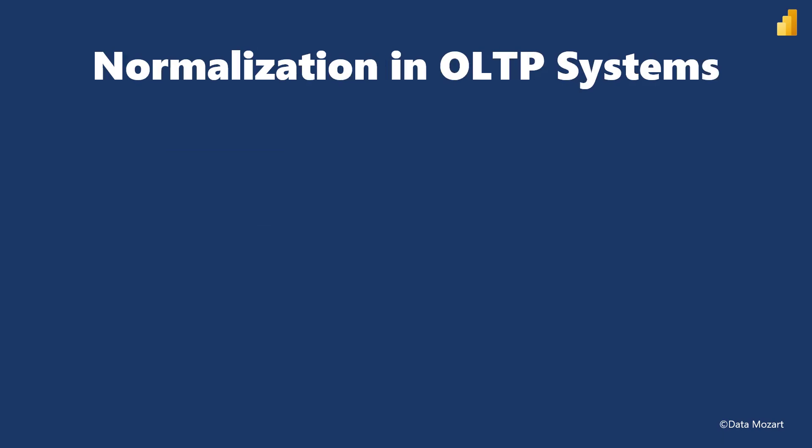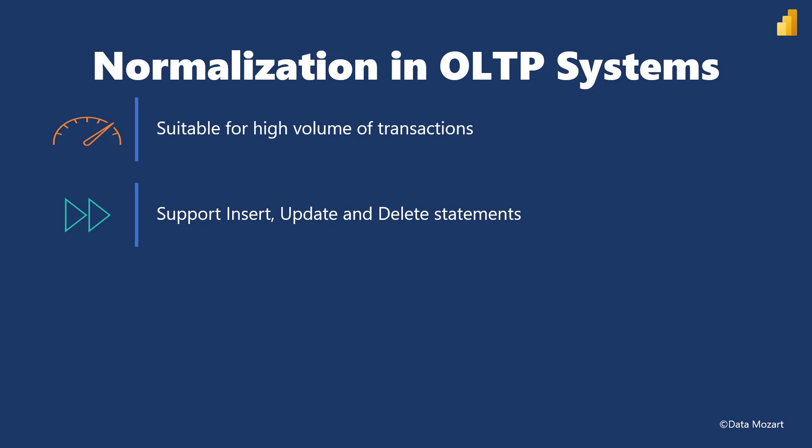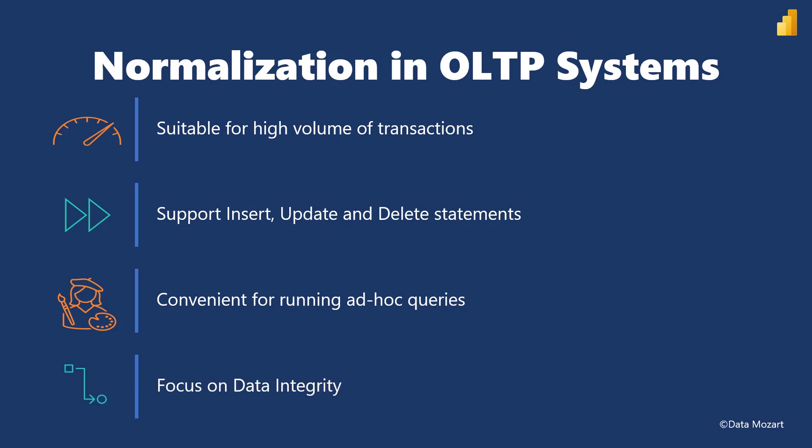Normalization is the key characteristic of Online Transaction Processing Systems, or OLTP. OLTP systems are suitable for processing a high volume of transactions — I mean millions of transactions per day. As the emphasis in OLTP is on fast processing, tables are normalized predominantly to a third normal form to support quick and efficient insert, update, and delete statements. OLTP systems are convenient for running simple ad hoc queries and they focus on providing data integrity.